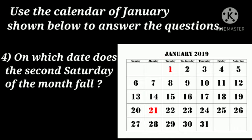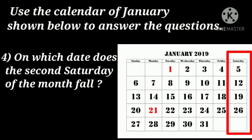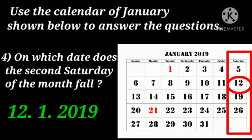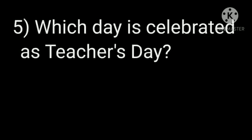Question number four: on which date does the second Saturday of the month fall? We have to find the second Saturday, so first we will search the Saturday column. The date of the second Saturday is 12-1-2019. So the date on the second Saturday of the month is 12th January 2019.